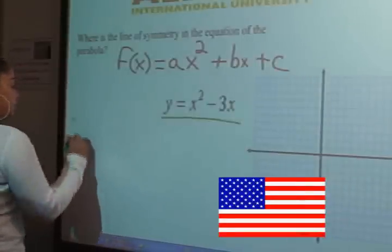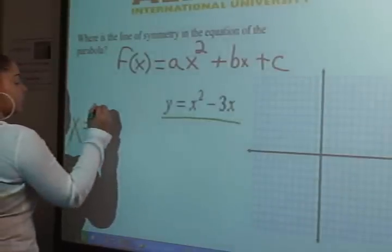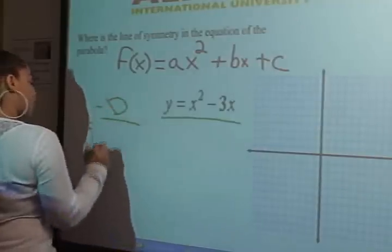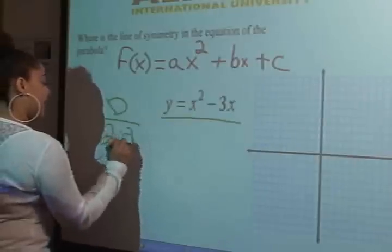So the first step would be to follow the equation negative b over 2a.